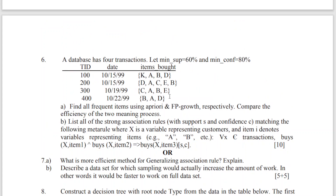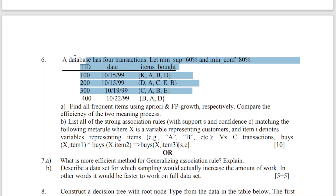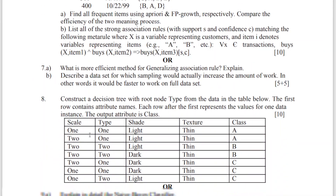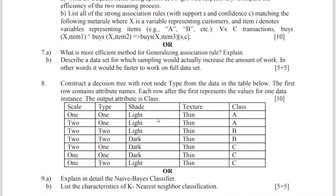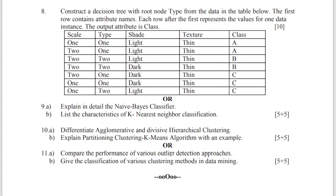A database of four transactions is completely related to the Apriori and FP-growth question — this is also important. Naive Bayes classifier and K-Nearest Neighbor classifiers, agglomerative and divisive hierarchical clustering, partitioning clustering, K-means algorithm, different outlier detection methods, and various clustering methods in data mining are also covered.